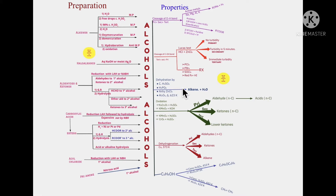Why the colors? Experience as well as science says that the human mind connects to colors — not just the human mind, birds and animals also connect with colors. So if you go through the flow chart slowly and then gently close your eyes, try to remember a reaction with the help of its color. The bold arrows, the bold green color, the red color, they will help you to remember the properties of alcohols.